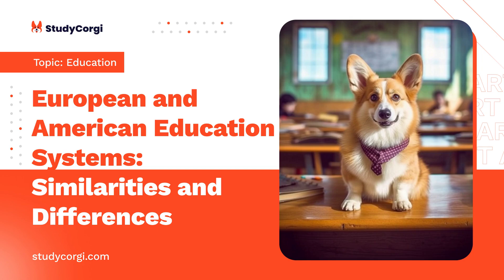Results from these studies show great disparities in the United States education system. According to Kirsch and fellow researchers, the performance gap in the United States between highest and low achievers is among the highest in Organization for Economic Cooperation and Development countries.